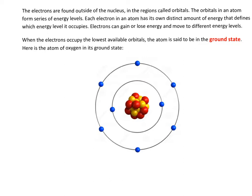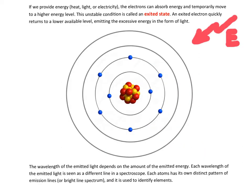This is oxygen in its ground state. If I write the electron configuration of this oxygen, it would look like this: two, six. The two represents the two electrons on the lowest energy level, and the six represents the six electrons located on the second energy level.